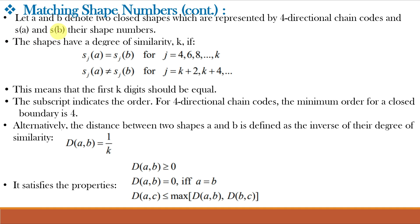If S(A) and S(B) are the shape numbers of two closed shape objects A and B, then the shapes have a degree of similarity small k if S_J(A) is equal to S_J(B), meaning the first k digits should be equal. The subscript J indicates the order, and for 4-directional chain codes the minimum order for a closed boundary will be equal to 4. Alternatively, the distance between two shapes A and B is defined as the inverse of their degree of similarity, so D(A, B) is equal to 1 divided by small k. This means the greater the degree of similarity, the smaller the distance between A and B, and this distance satisfies certain properties.